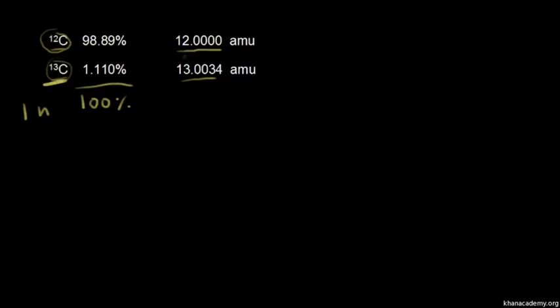And notice what happened to the mass. The mass went from 12 to approximately 13. So you can see right away that a neutron has approximately a mass of one AMU. Now these numbers are not exact, but it's just to give you an idea of adding a neutron makes the isotope have more mass. There's more stuff.